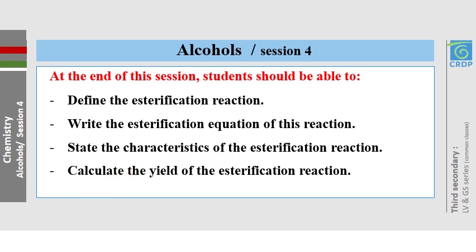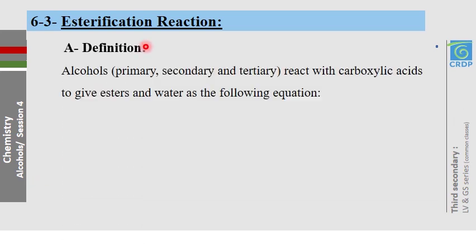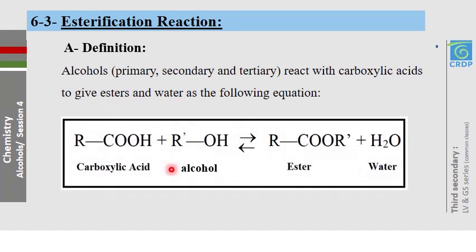We are going to start with the esterification reaction definition. Primary, secondary, or tertiary alcohols can react with carboxylic acids to give us esters and water. The aim of this reaction is to produce an ester, and water is a byproduct. This reaction is incomplete.